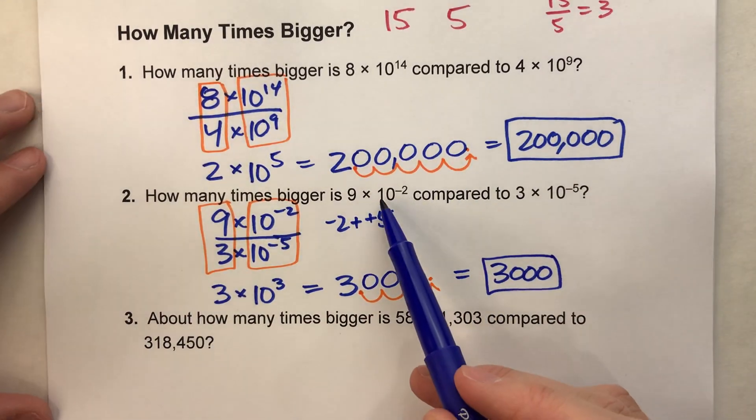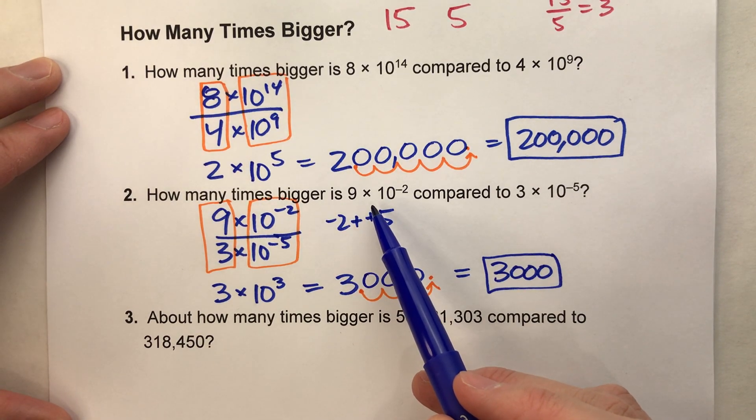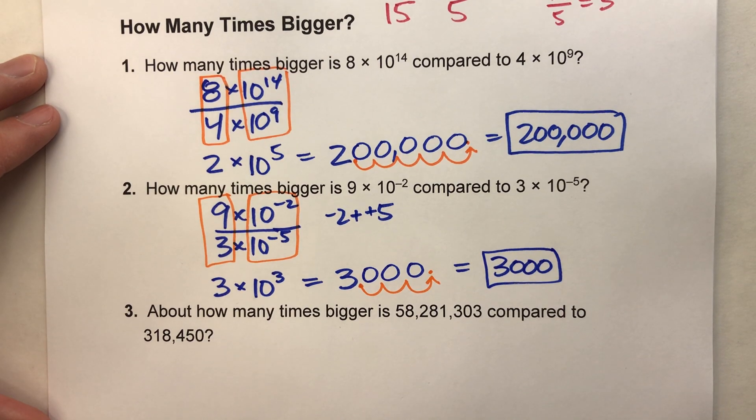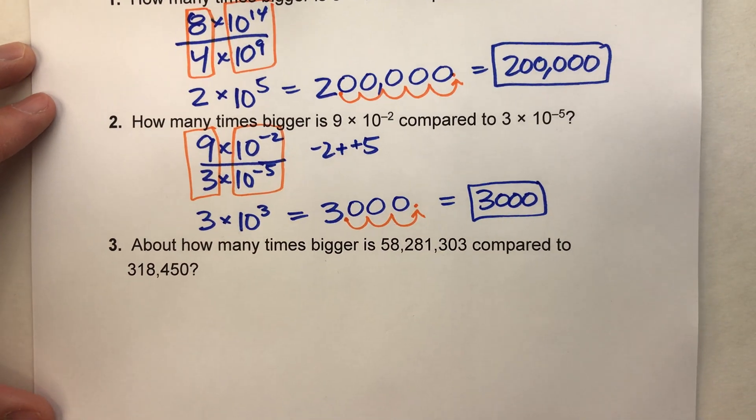So that tells you this number is 3,000 times bigger than this one. See? So it's not too bad, right? Let's do a slightly harder one now.